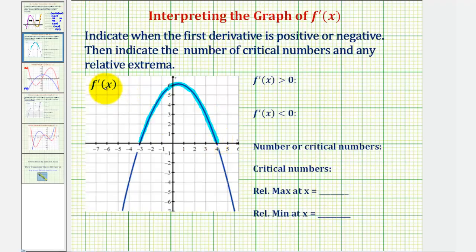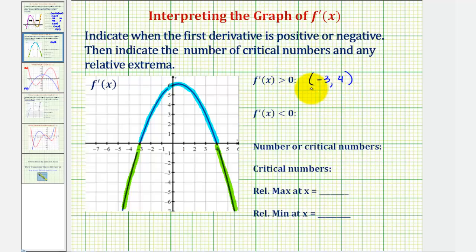The derivative function is negative when it's below the x-axis, which would be over this interval here and this interval here. So the first derivative is positive over the open interval from negative three to positive four. Remember, this means that the function f of x would be increasing over this interval. Watch how we compare the derivative function to the actual function f of x when we finish.